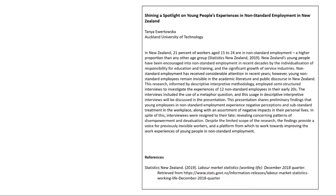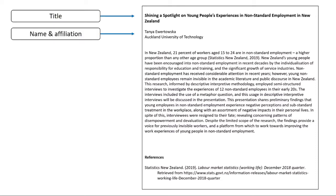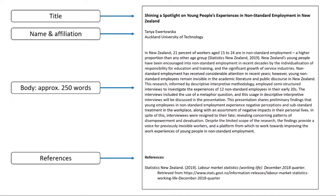A conference abstract looks like this. Each conference sets its own formatting rules, but most require a title, your name and affiliation — unless the abstract is to be anonymously reviewed — approximately 250 words of text, and references for any sources cited. In some cases, your abstract may require other elements as well, depending on the conference organisers' instructions.